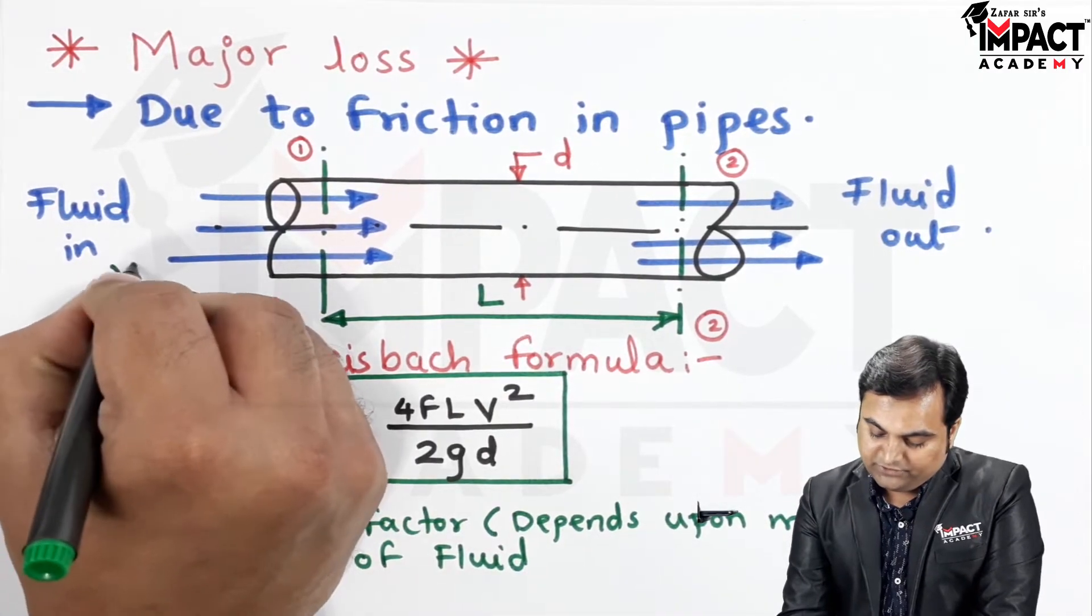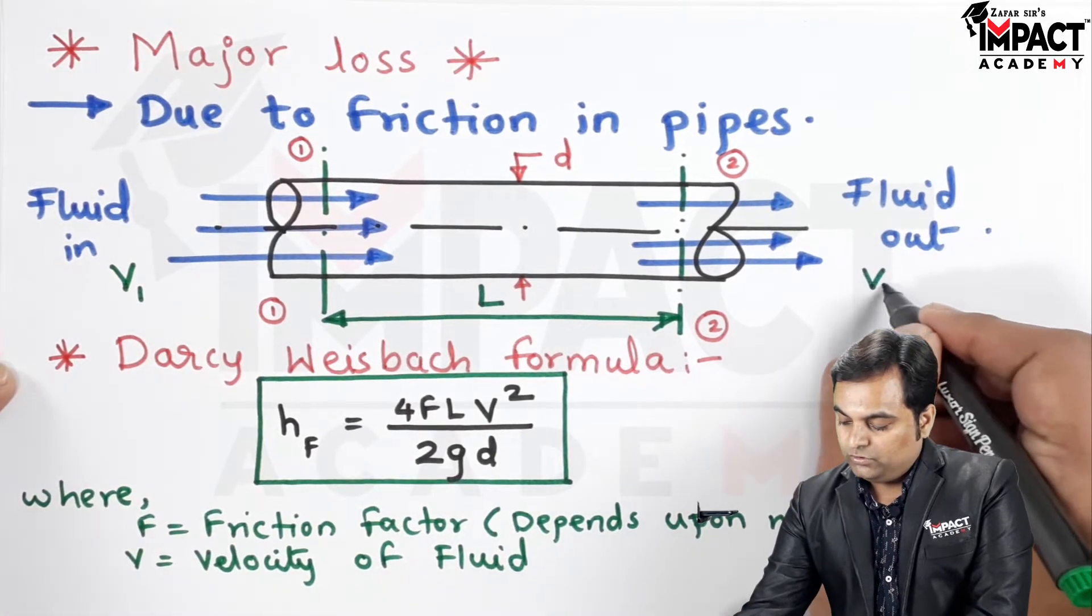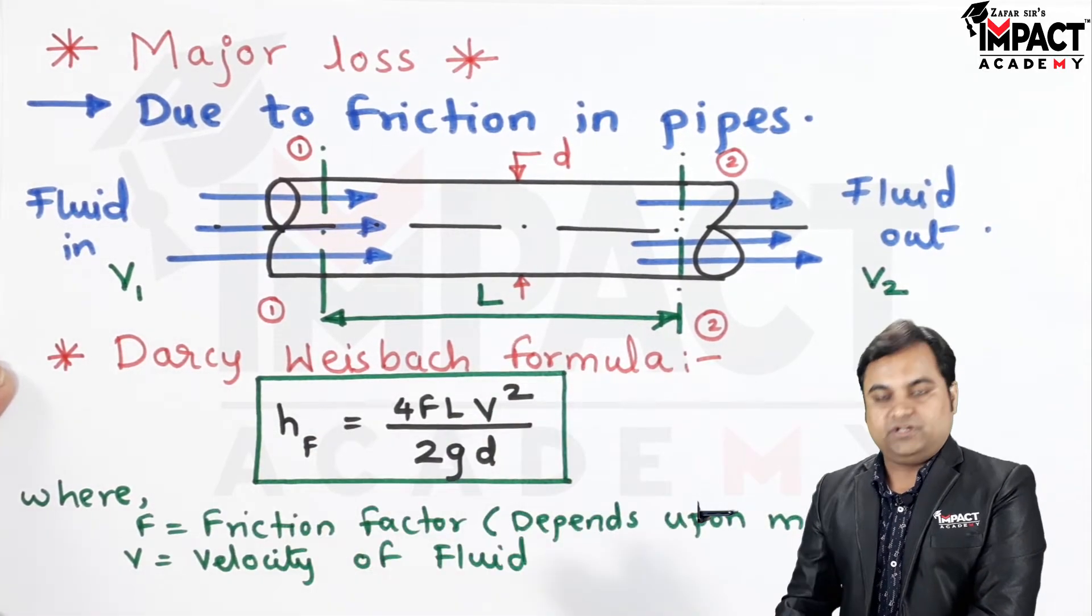And that velocity V, here it is a constant diameter pipe, so V1 and V2, the velocities at both the sections would be same.